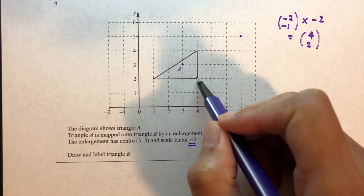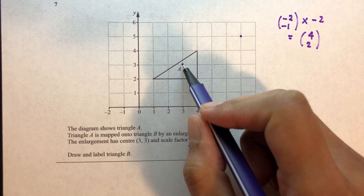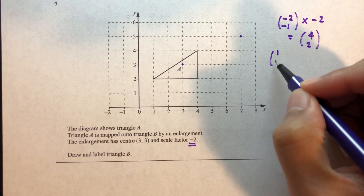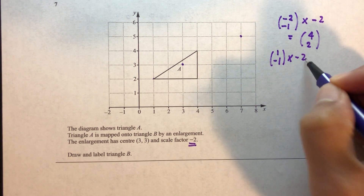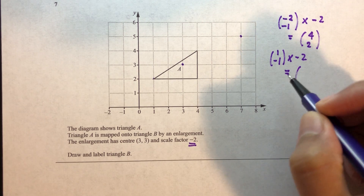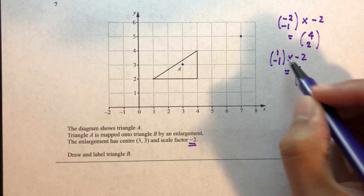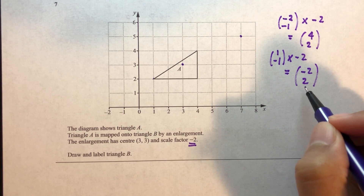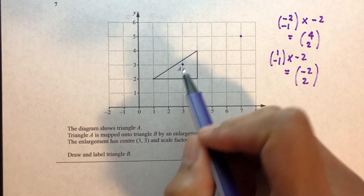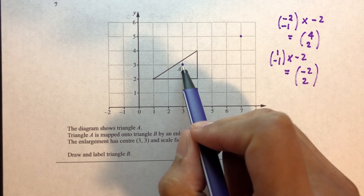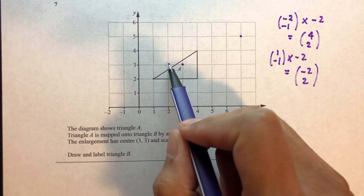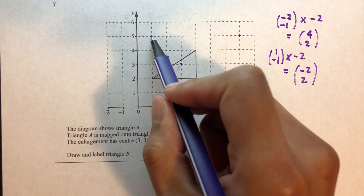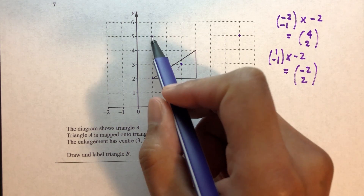For the second point: from center (3,3), move right by 1 and down by 1, giving vector (1, minus 1). Multiplying by scale factor minus 2: (1 times minus 2, minus 1 times minus 2) equals (minus 2, 2). From the center, we move 2 left and 2 up to plot the second image point.